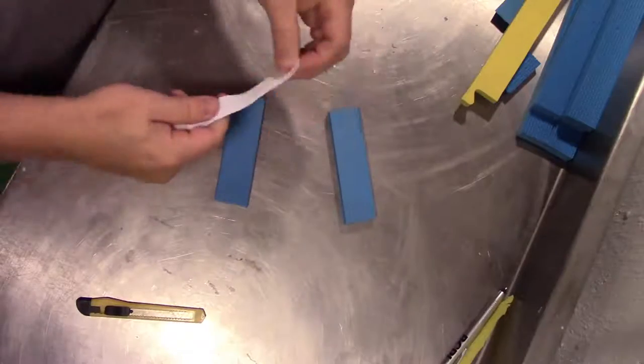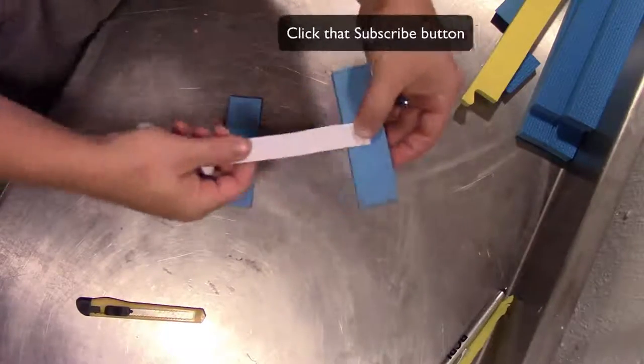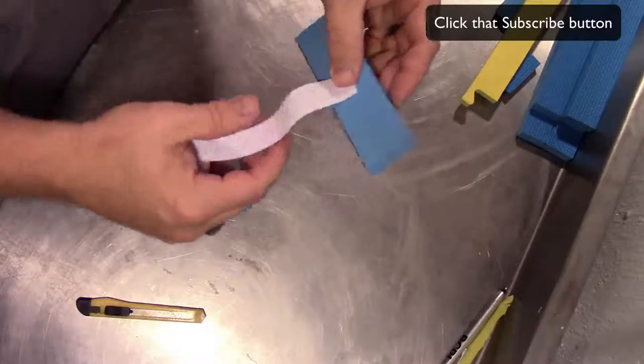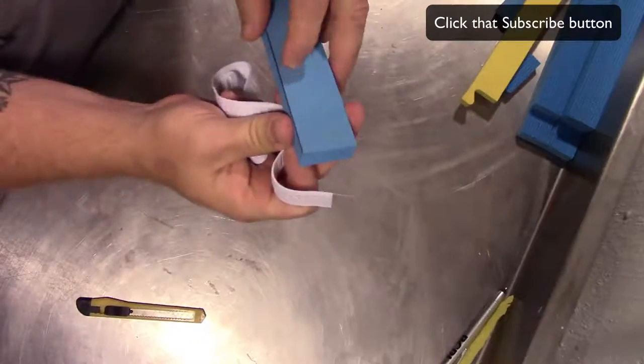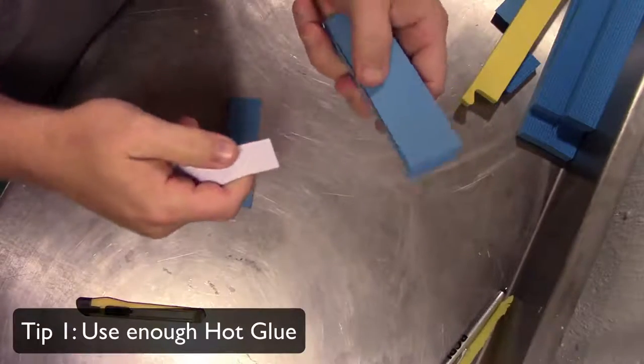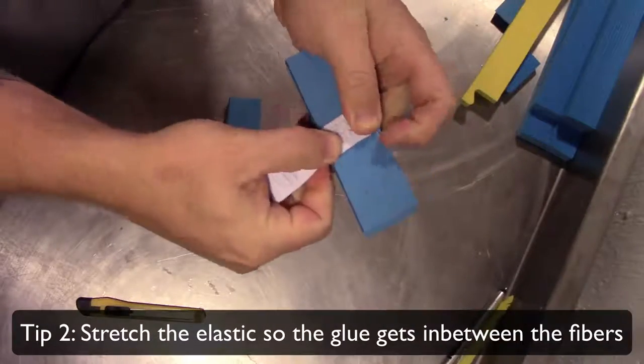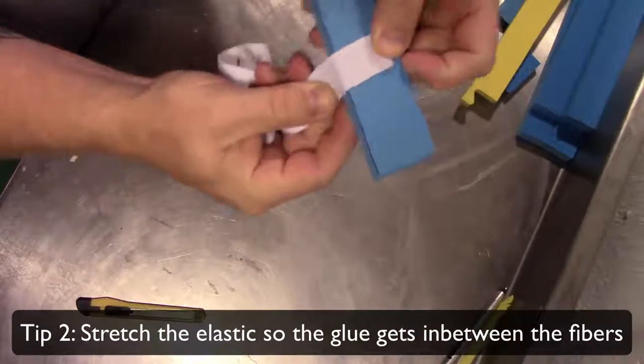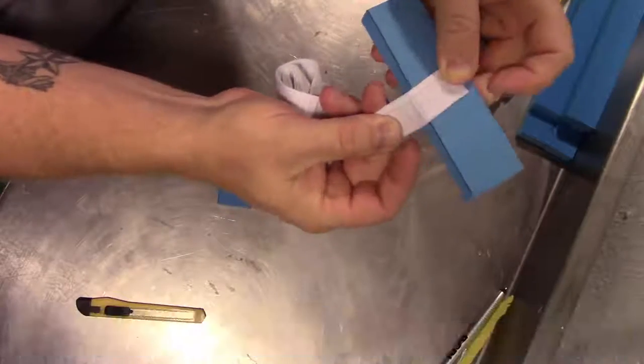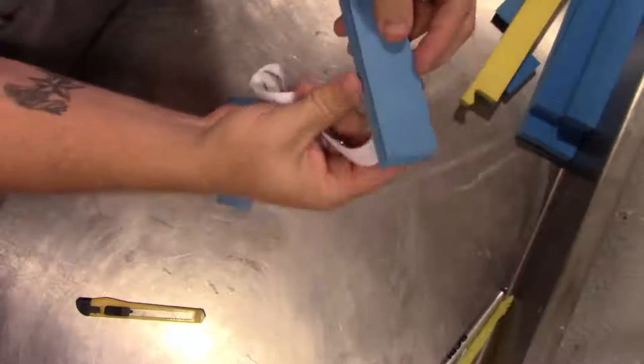Today I'm going to show you a quick tip on how to have stronger elastic attachments. Elastic is often times just hot glued down and there's a couple things you can do to try to make it stronger. First thing is to make sure you have ample hot glue underneath. Stretch this before you allow it to stick.